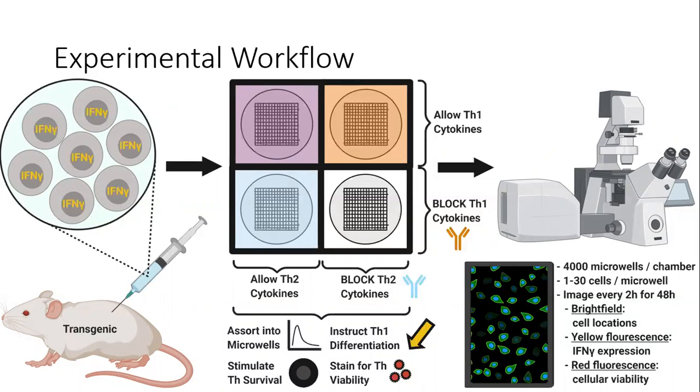Inside each chamber were grids of 4,000 microwells each, so that cells would randomly assort into replicated groups of different sizes, anywhere from 1 to 30 cells.